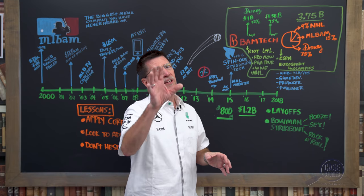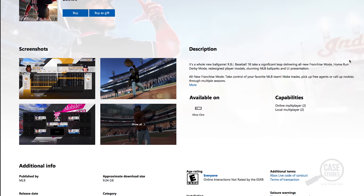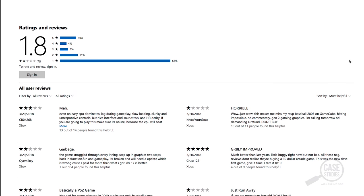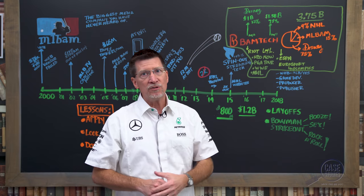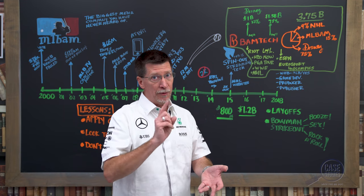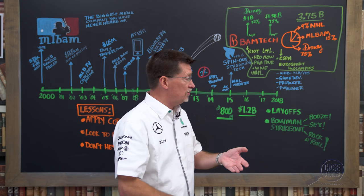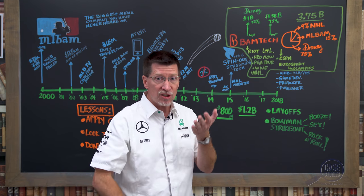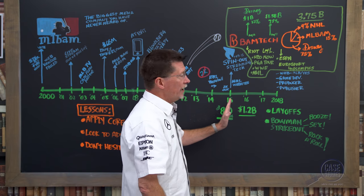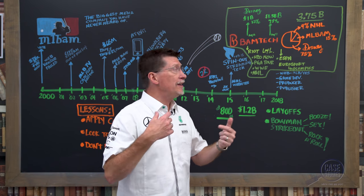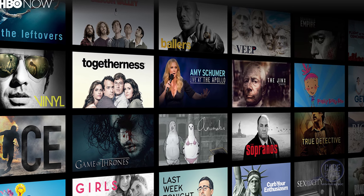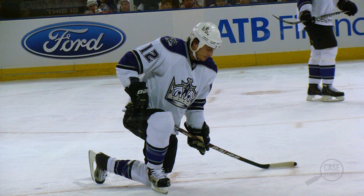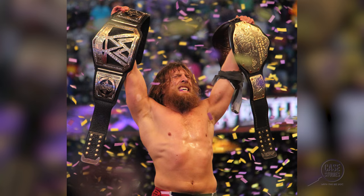RBI Baseball — similar to the Cubs fans — may take a hundred years to get it right, if you read some of those game reviews over the years. Nonetheless, Major League Baseball was now a game developer, game publisher, producer, web developer, and streaming provider — all at once — with the streaming side having signed a lot of cool partners such as HBO for HBO Now, the PGA Tour, the National Hockey League, and WWE.